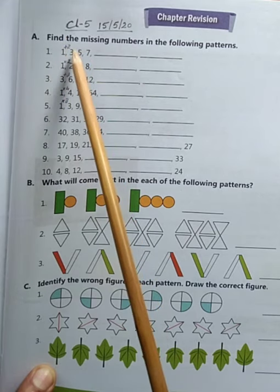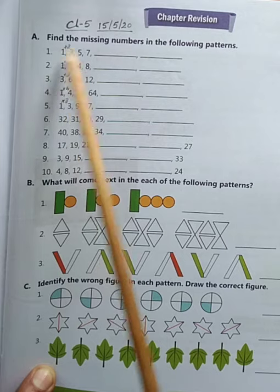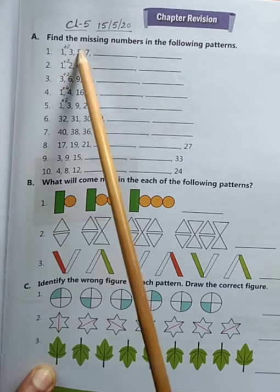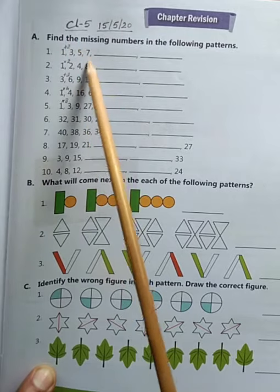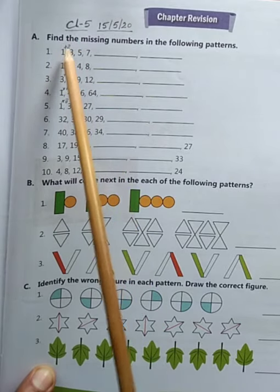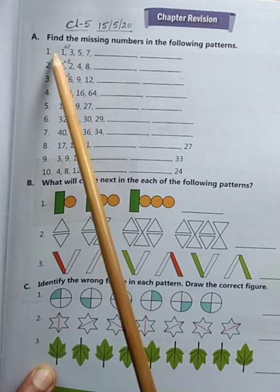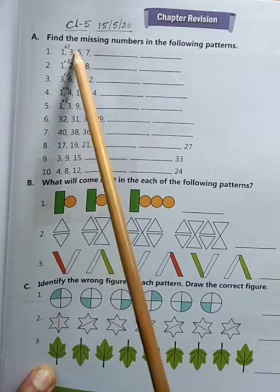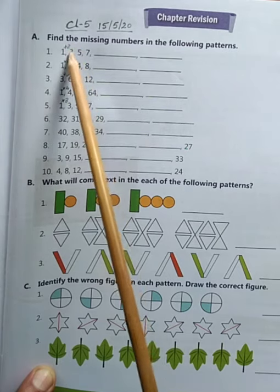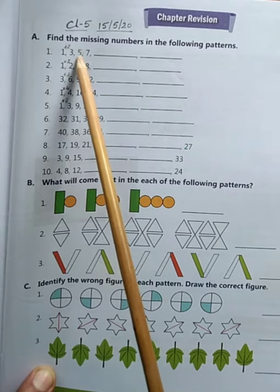If you subtract the first from the second, we get 3 minus 1 as 2. Again here also 5 minus 3 is 2, 7 minus 5 is 2. So there is some rule followed here. That means the next number is 2 more than the previous number.